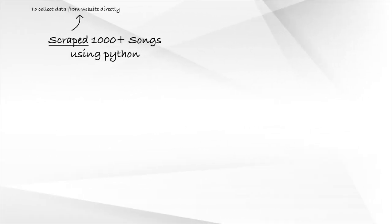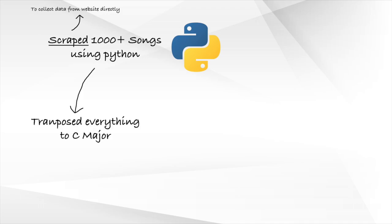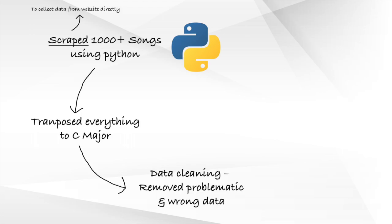For some background, I scraped over a thousand of the most popular songs and their chords from automatedguitar.com using some Python and stored the collected data on my computer. As many songs were in different keys, I transposed all of them to C major so that we can compare them fairly. There were quite a few problematic ones where chords were written in weird formats, so we omitted those and were left with 752 songs and their chords in C major.